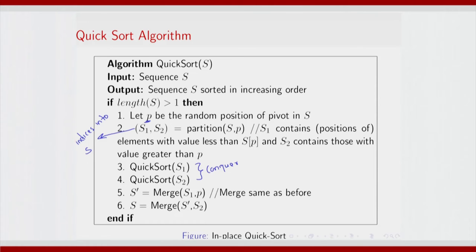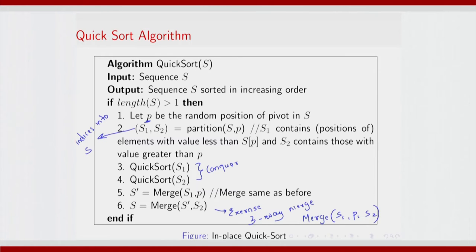Now, since we have s1 and s2 in place and they are already sorted, finally you just need to merge s1, s2 and p. This merge is the same as before. You could also come up with a 3-way merge — an exercise would be to come up with that 3-way merge. It is actually a very trivial extension of what we have seen.